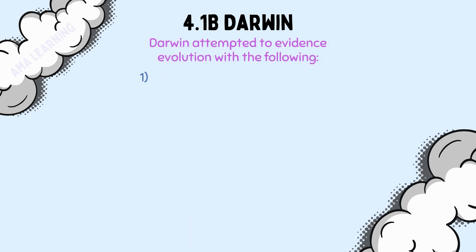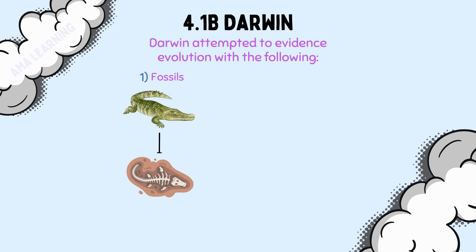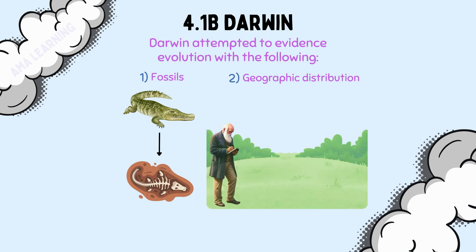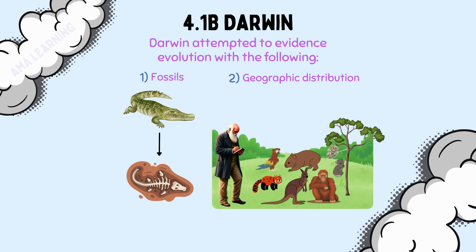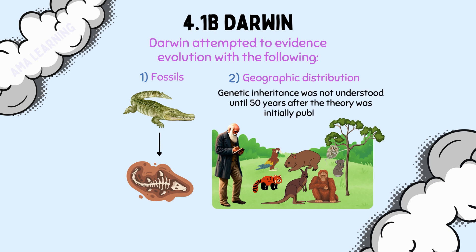Fossils were used to show gradual changes in species over time. Geographic distribution: Darwin found unique species on islands and considered this to support evolution. Ultimately, the lack of evidence at the time the theory was published did not convince many scientists. Genetic inheritance was not understood until 50 years after the theory was initially published.